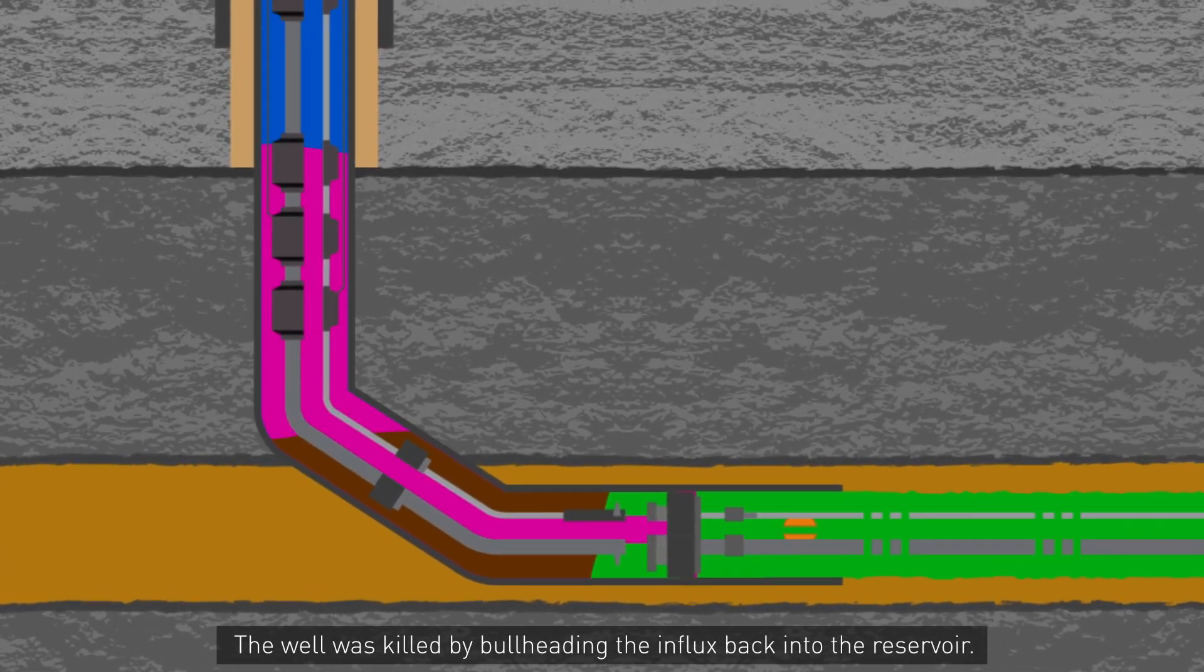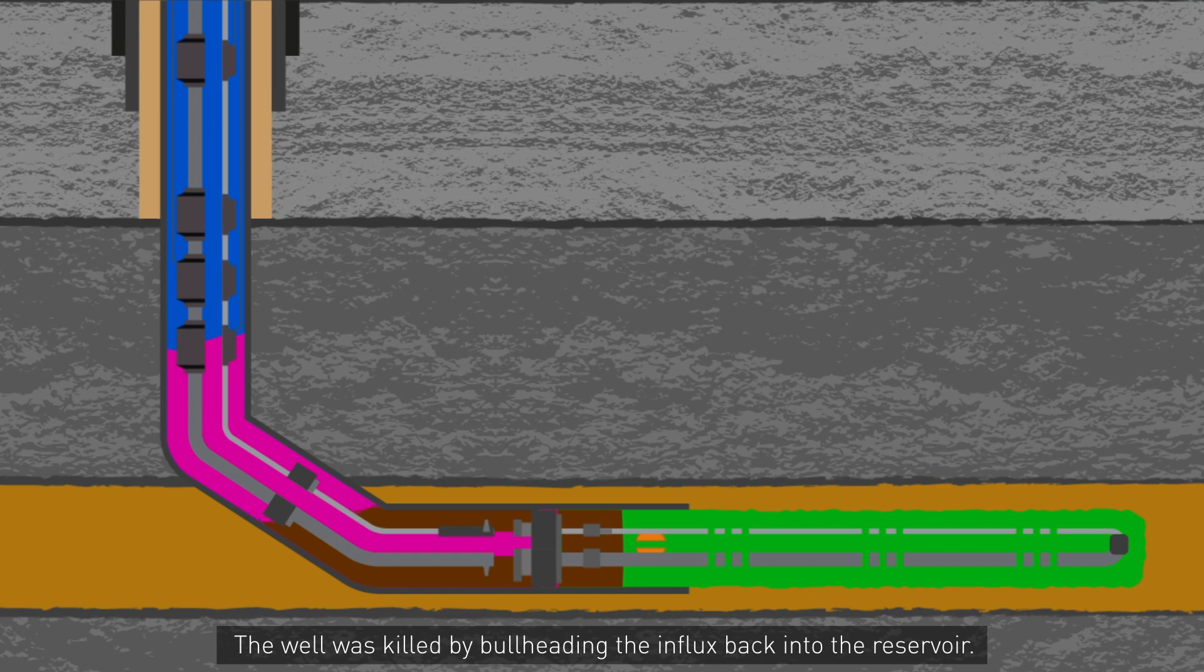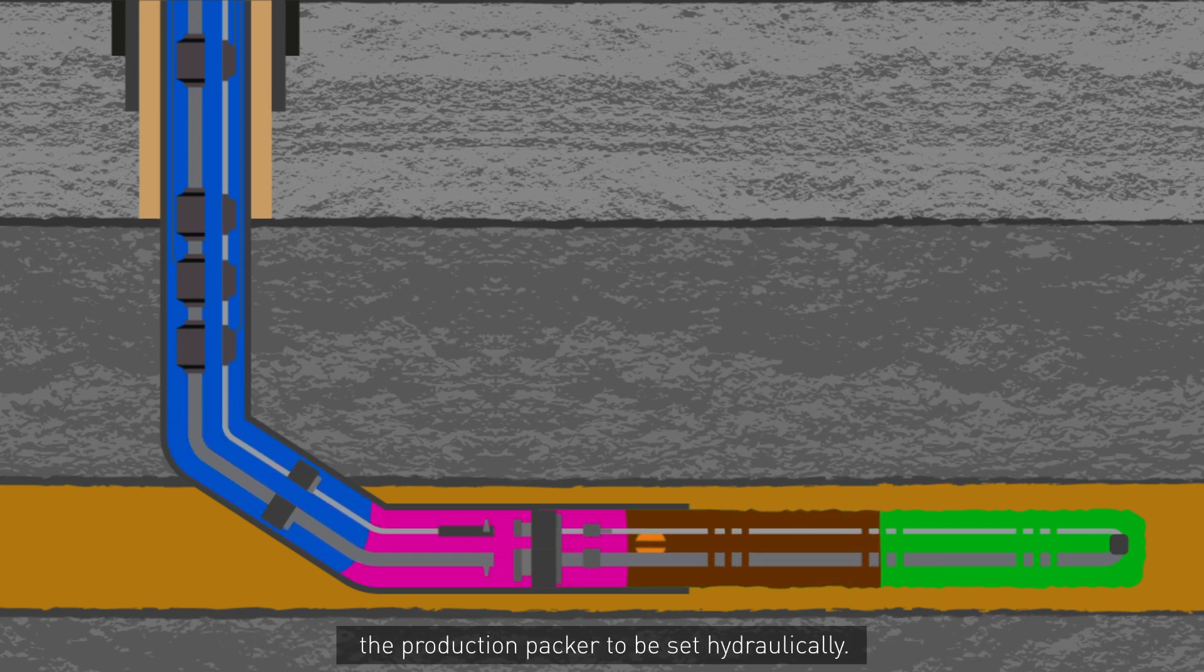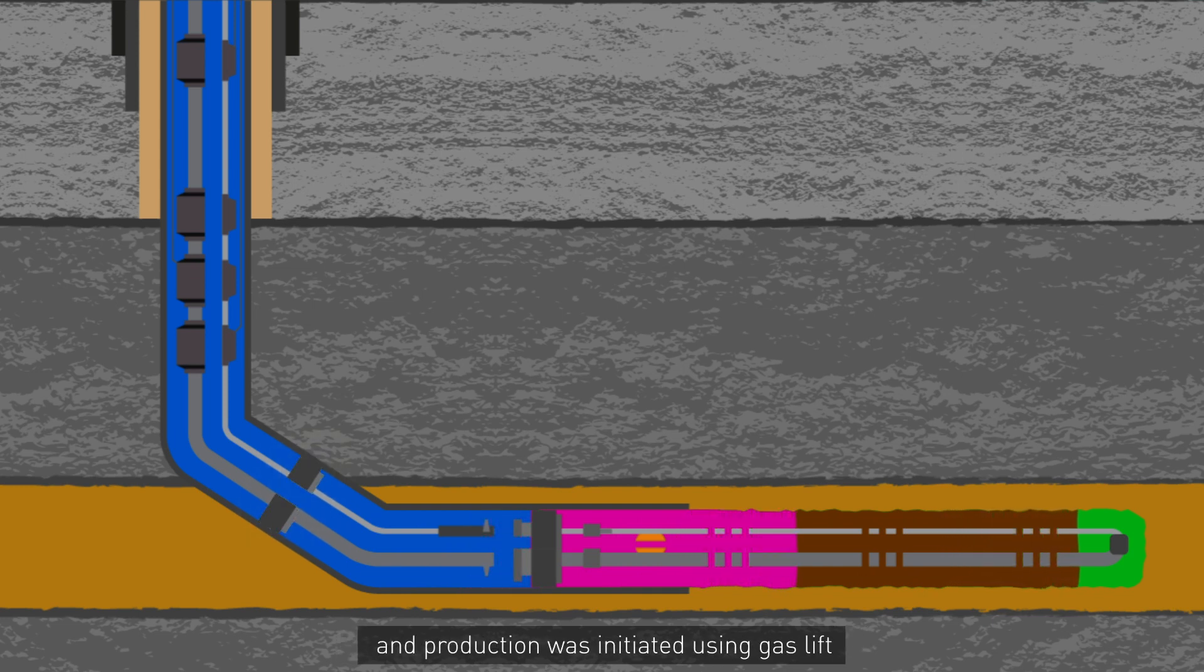The well was killed by bullheading the influx back into the reservoir. A tubing plug was deployed on wireline to allow the production packer to be set hydraulically. Completion operations were concluded and production was initiated using gas lift to create an under-balance to the formation.